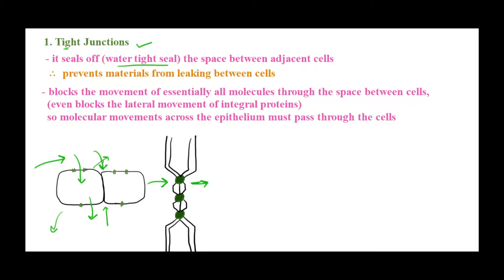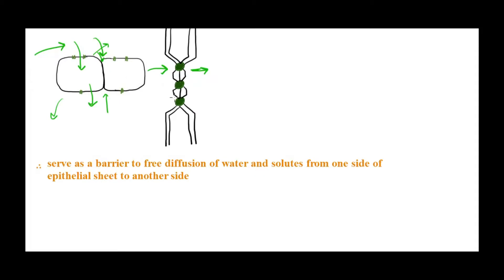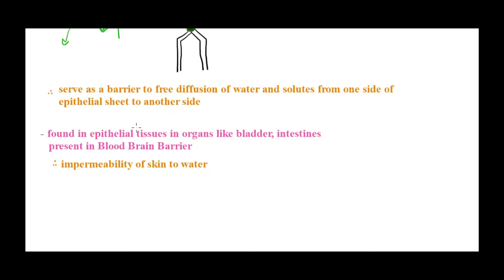This tight junction is so tight that even the lateral movement of integral proteins in the plasma membrane cannot pass through. It provides a barrier for any kind of free diffusion of water or solutes from one side of the epithelial cell sheet to the other. This is very important in organs like the bladder, where we cannot afford any leakage through or between the cells. Similarly, in the intestine there cannot be a free passage of substances between cells.